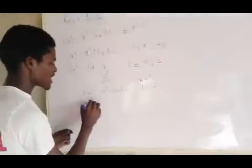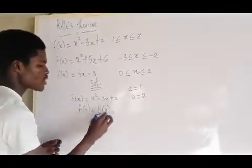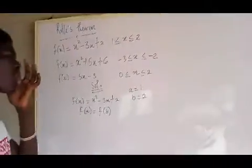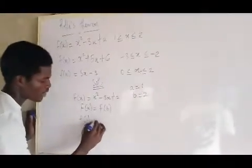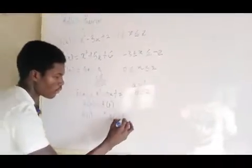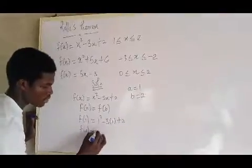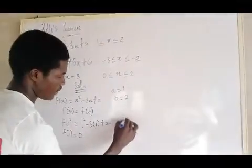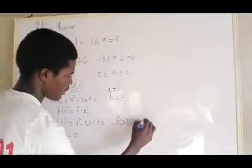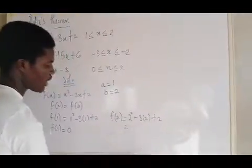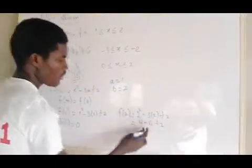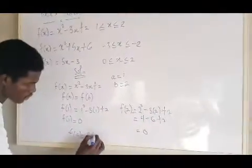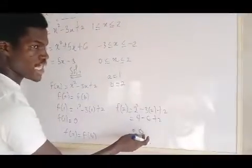The next thing to check is that f(a) must equal f(b). So let's check: f(1) = 1² − 3(1) + 2 = 1 − 3 + 2 = 0. Now f(2) = 2² − 3(2) + 2 = 4 − 6 + 2 = 0. You can see that f(a) equals f(b), both are zero.